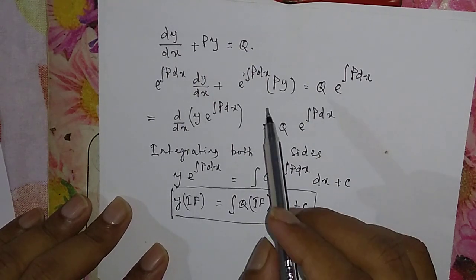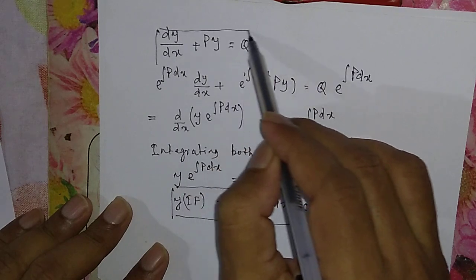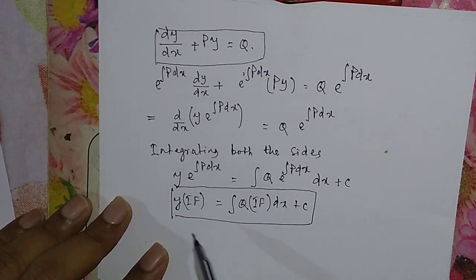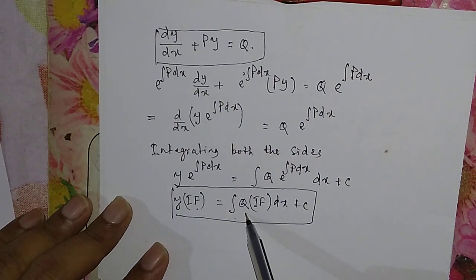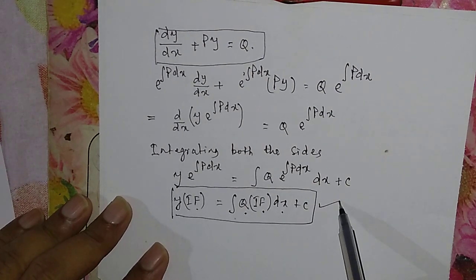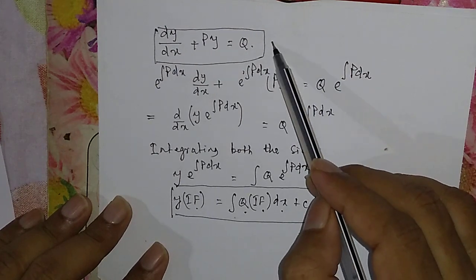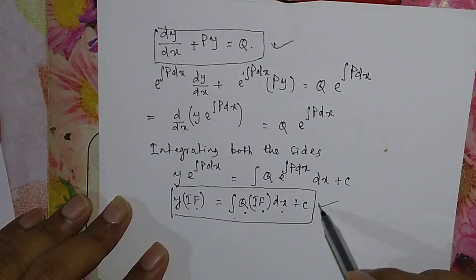So if you have a linear or Leibniz equation, its solution will be y times the integrating factor equals the integral of Q into the integrating factor dx plus C. You must remember this solution formula.